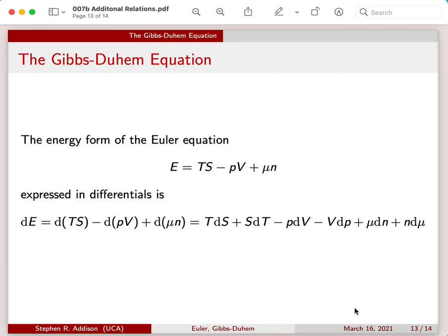But also recognizing, now when we have these terms, we've got TdS minus PdV plus μdn, which we recognize is dE on the right-hand side. And we have dE on the left-hand side. So what that means is we can make the left-hand side zero and eliminate three terms from the right-hand side.